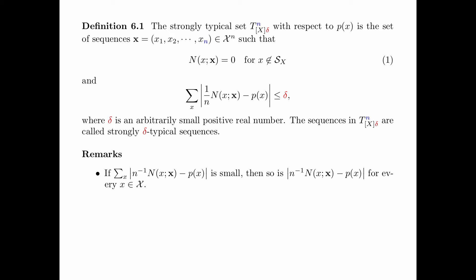Note that in the above definition, if the summation is small, then so is every term in the summation. That is, the absolute difference between the relative frequency of x and the probability of x is small for every x in the alphabet.